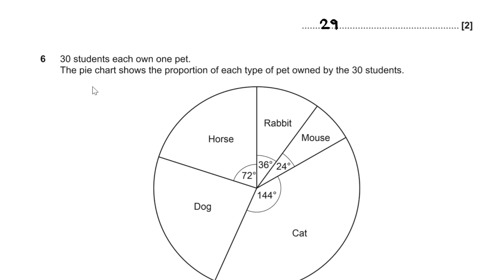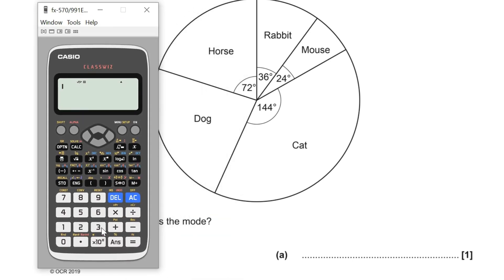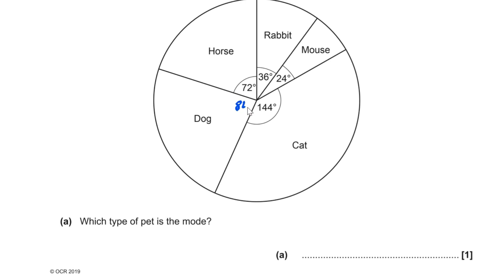Question 6. 30 students each own one pet; a pie chart shows the proportions. For part A, we find the missing angle for dog: 360 − 72 − 36 − 24 − 144 = 84 degrees. The largest angle corresponds to the mode, and 144 degrees for cats is largest, so the mode is cat.